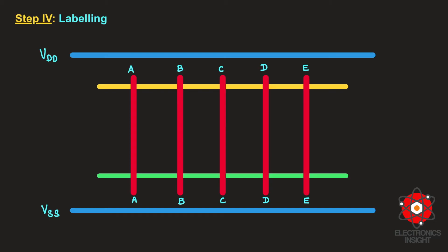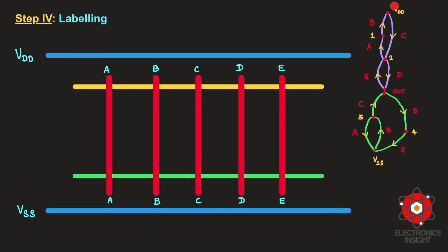Next we need to do the labeling. I have labeled the VDD, VSS layers and the polysilicon gate layers. As per the Euler graph, certain interconnection nodes were identified — these are the vertices of the Euler graph named 1, 2, 3, 4, along with VDD, VSS, and OUT. We need to mark these vertex names in the stick diagram to make drawing the remaining connections much easier.